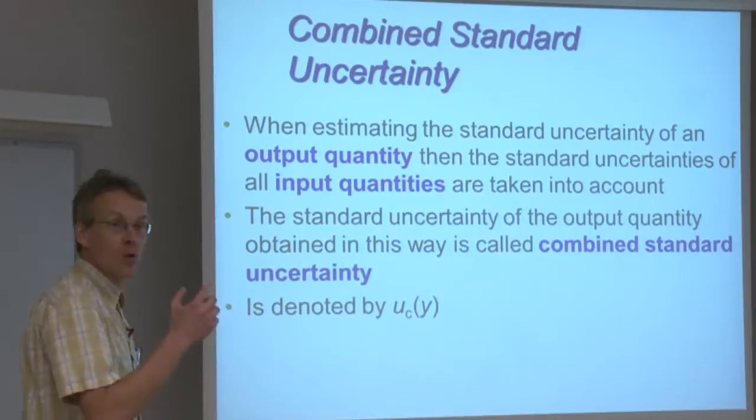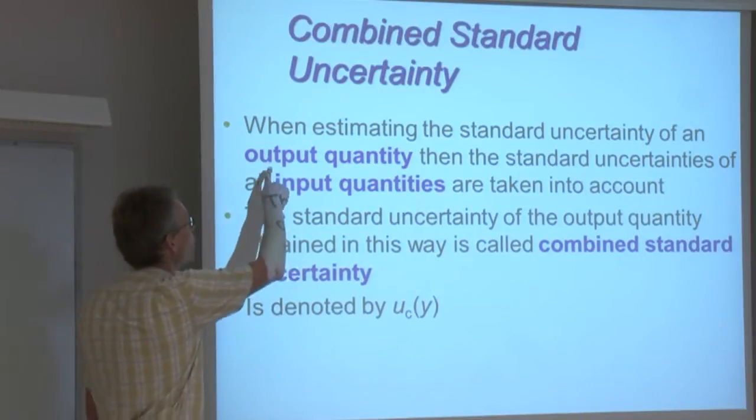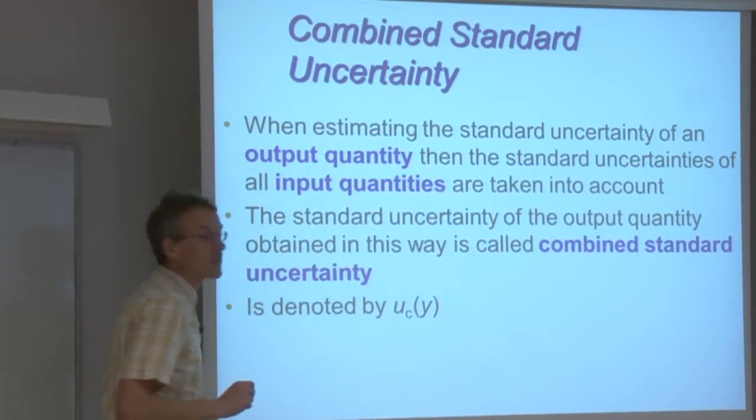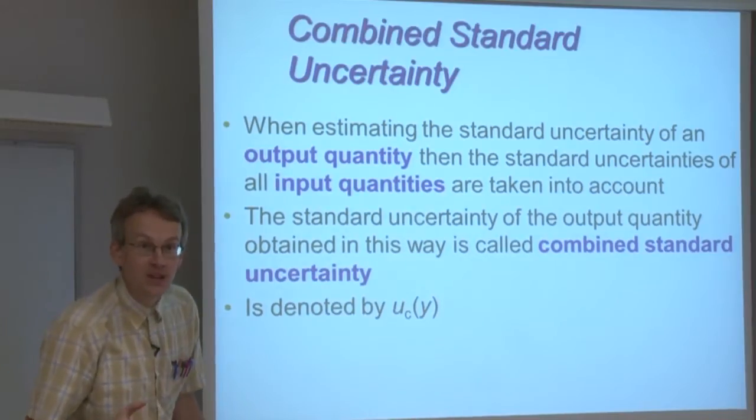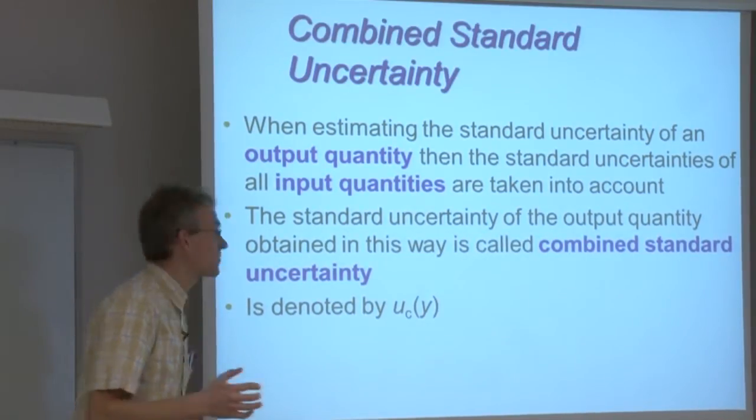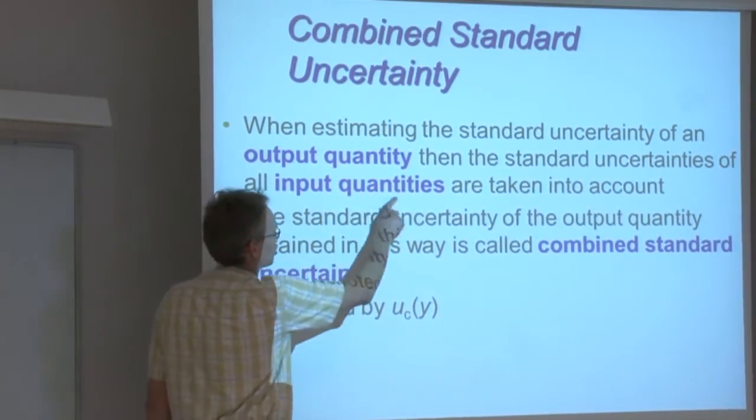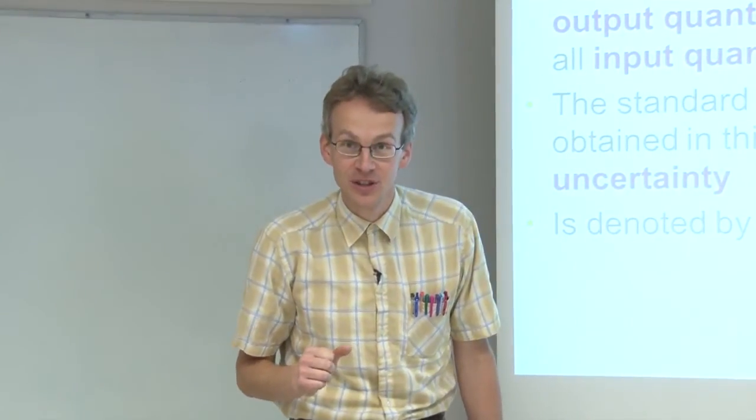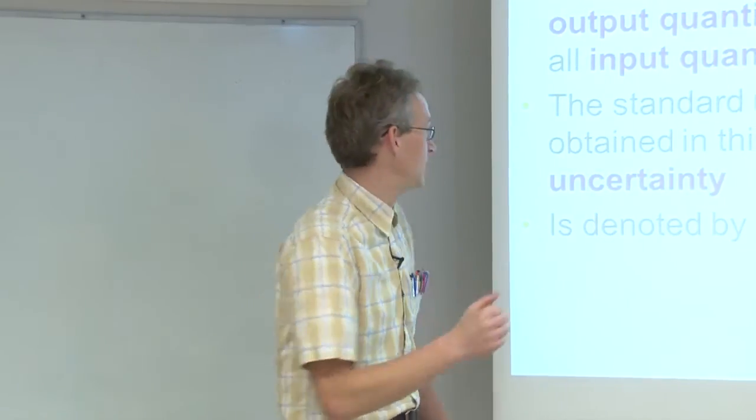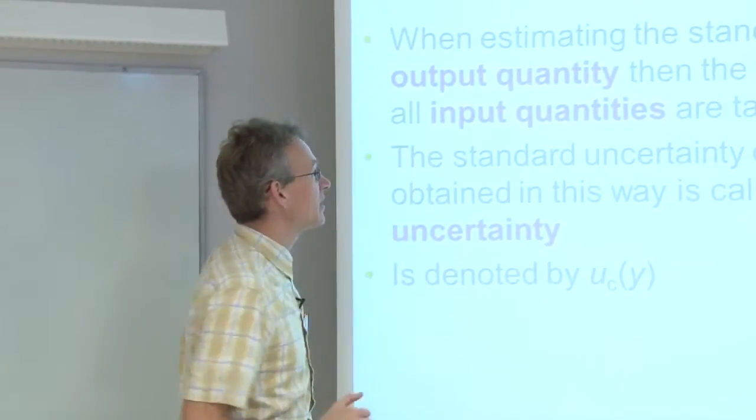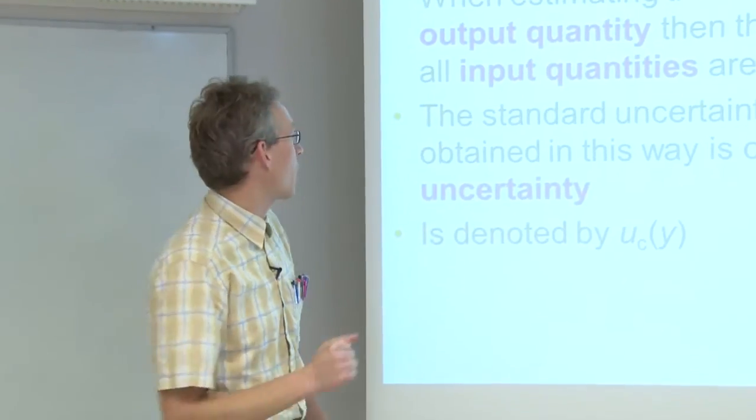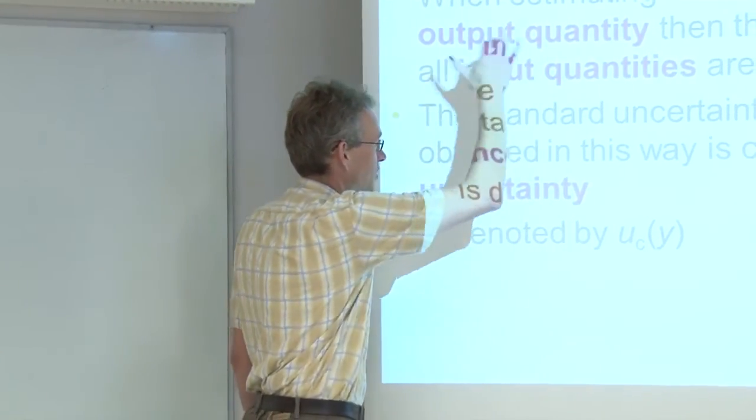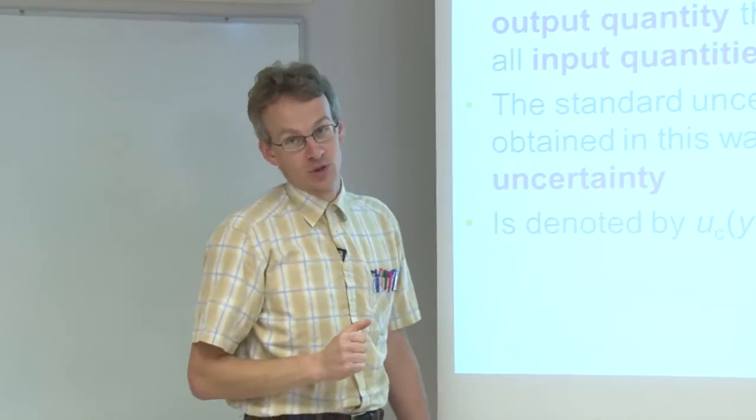And so, as it is called in measurement science, our measurement result is an output quantity which is influenced by or calculated from a number of input quantities. And now the combined standard uncertainty is the uncertainty of the output quantity which takes into account the uncertainties of all the input quantities.